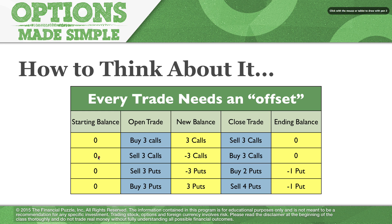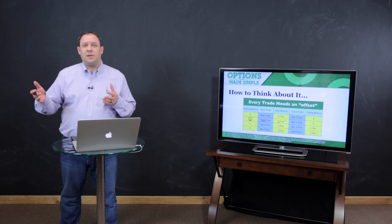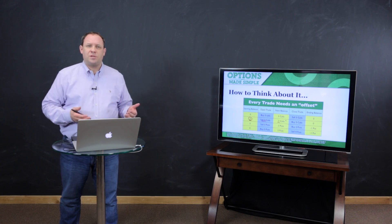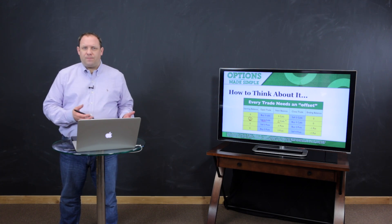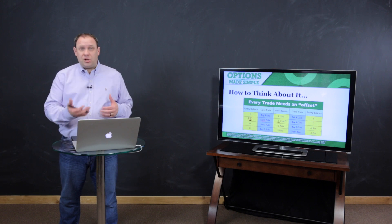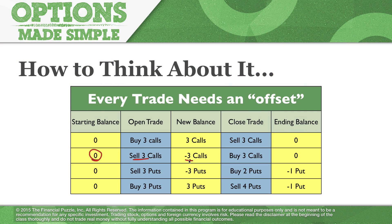Let's start with a short trade. Say we open with a balance of zero and we sell three call options — now your new balance is minus three calls. You're in a short position because you sold those calls. Whenever you sell an option, you're technically called short. It's kind of like when you short a stock, but there's a difference: you don't owe the option like you do when you short a stock. When you short an option, you have an obligation tied to it — we sold the rights, so now we're obligated. It shows up in your balance sheet as a negative.